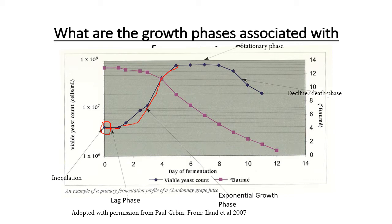Once there's no more population growth, we're in the stationary phase — interestingly, for any microorganism, whatever their grand scheme or goal is always happens during the stationary phase. This is where the primary amount of fermentation and alcohol production occurs. Eventually the sugars disappear, nutrients run out, and it becomes a very toxic environment for yeast, leading to a decline and death phase — that's why we see the fermentation curve rise rapidly and then taper off.